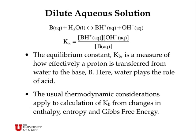For bases, it is exactly the same, except we write the base equation as a base reacting with water to take a proton away from the water molecule, forming the conjugate acid BH+ and leaving a hydroxide anion. We have a Kb expression, which is the equilibrium expression just as before, and it can be calculated from thermodynamic considerations. Kb is a measure of how effectively a proton is transferred from the water to the base, and here water plays the role of the acid.